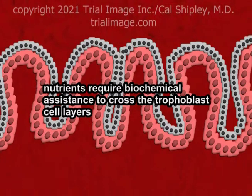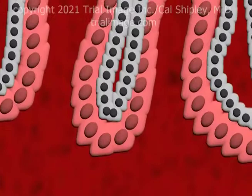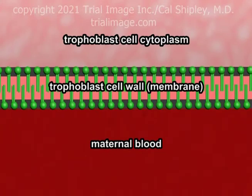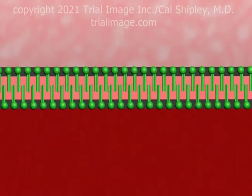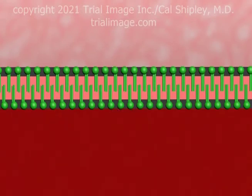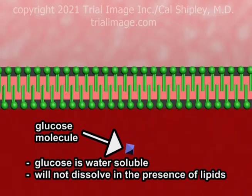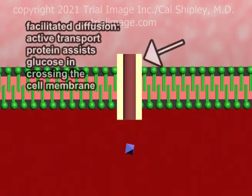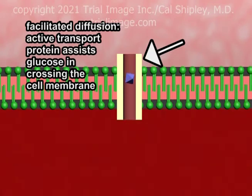Nutrients, on the other hand, require biochemical assistance to cross the trophoblast cell layers. Looking at how the most important nutrient glucose traverses the trophoblast under greater magnification, we see the maternal blood, the trophoblast cell wall, and within the cell wall, the cell cytoplasm. The cell membrane consists of a double layer of lipids known as phospholipids. Because glucose molecules are water soluble and will not dissolve in the presence of lipids, glucose depends on a special kind of protein known as an active transport protein to cross the trophoblast cell membrane. This process is known as facilitated diffusion.